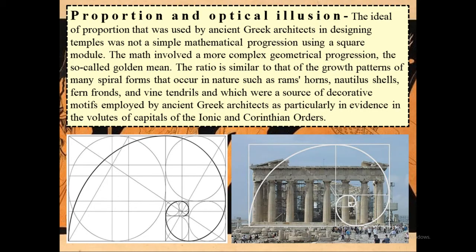The ideal of proportion used by ancient Greek architects in designing temples was not a simple mathematical progression using a square module. The math involved a more complex geometrical progression, the so-called golden mean. The ratio is similar to that of the growth patterns of many spiral forms that occur in nature, such as rams' horns, nautilus shells, fern fronds, and vine tendrils, which were a source of decorative motifs employed by ancient Greek architects, particularly evident in the volutes of the capitals of the Ionic and Corinthian orders.